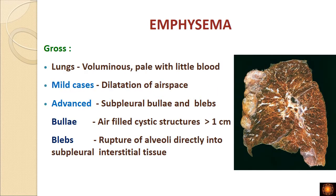Looking at the morphological changes, the lungs become voluminous because the air spaces are dilated. As the air spaces dilate, they compress the small blood vessels present in the alveolar walls, so the lungs appear pale due to little blood. Grossly, the lungs are voluminous but pale in color. In mild cases on cut section we see dilated air spaces.